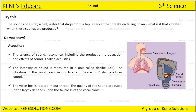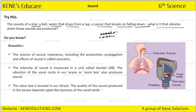Let's try this experiment. The sound of a sitar, a bell, a water drop, a tap, or a saucer that breaks on falling down — what is it that vibrates when these sounds are produced? The particles of a given substance vibrate about their mean position, and that is how you are able to hear the sound.